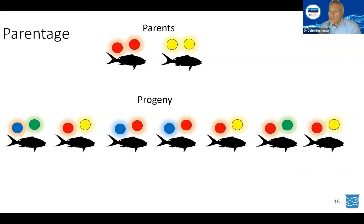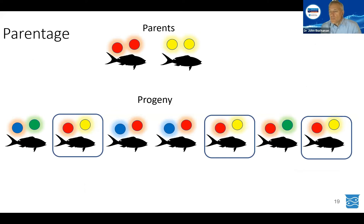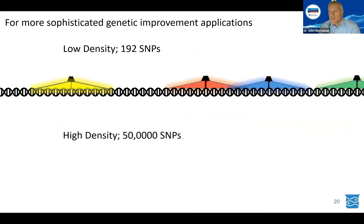You can also assign progeny to parents. If you know the SNP pattern of the parents — in this simplified view, a female has two red SNPs and the male has two yellow SNPs — using these low-density SNP panels you can figure out which progeny came from which parents. This can be extremely valuable in an aquaculture operation when looking at groups of fish to figure out which families perform the best.